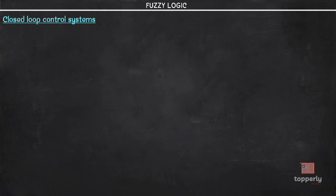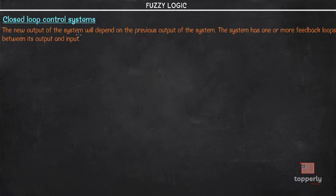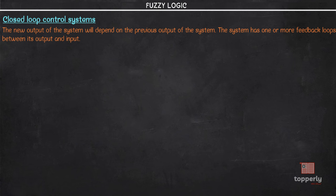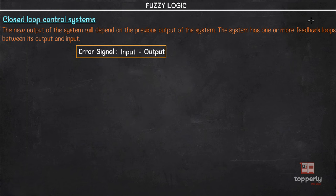Now let's look at closed loop control systems. In a closed loop control system, also called a feedback control system, the new output of the system depends on the previous output. The system has one or more feedback loops between its output and input. It is designed to automatically provide the desired output by comparing it with the actual input and generating an error signal, which is the difference between the input and output.